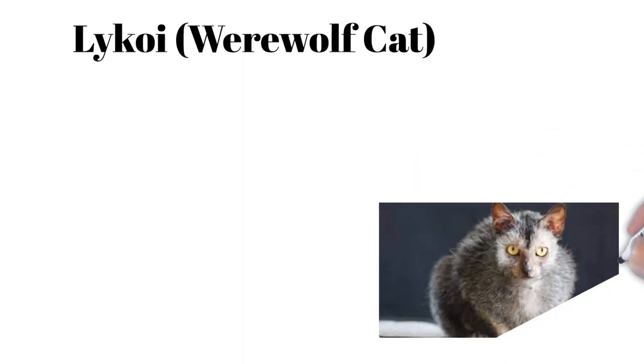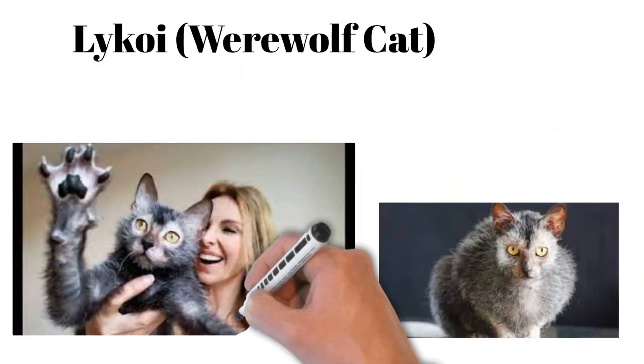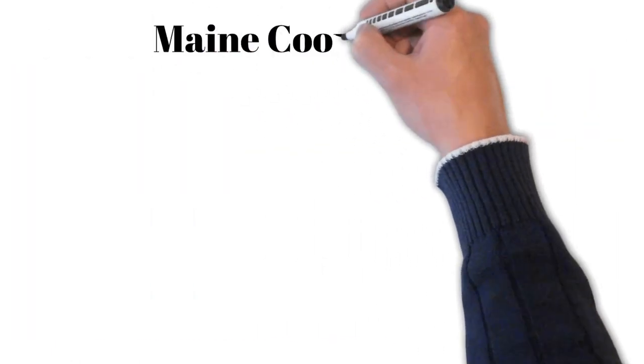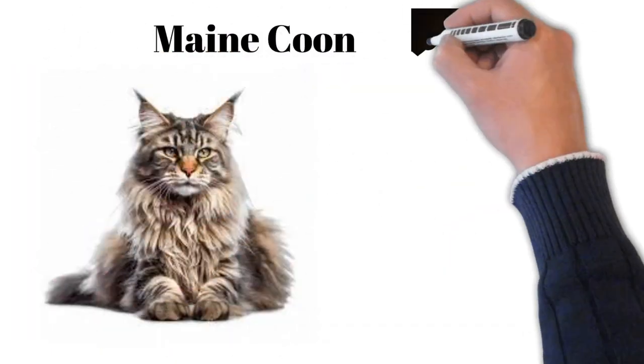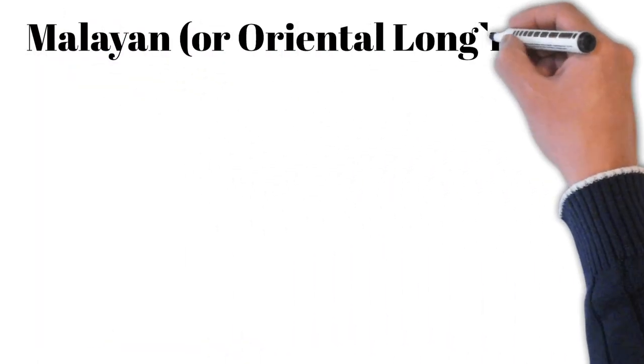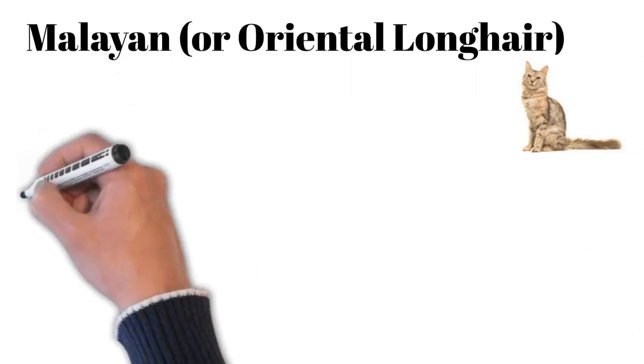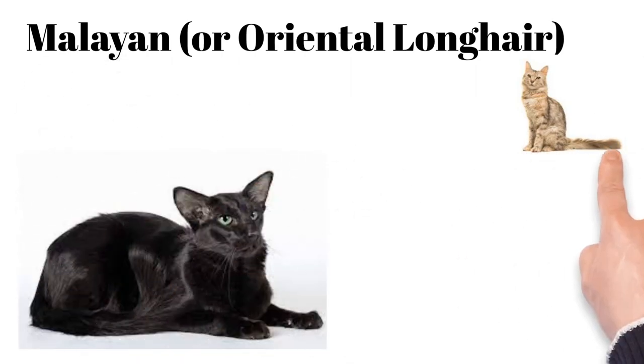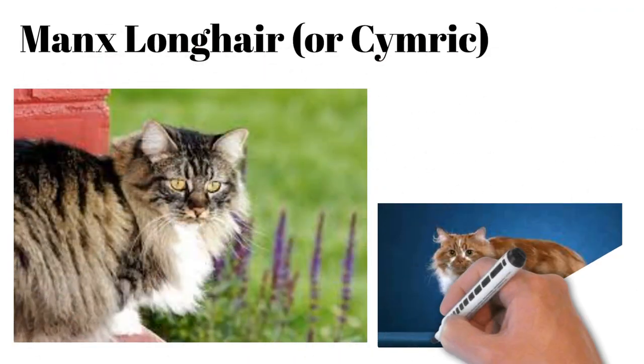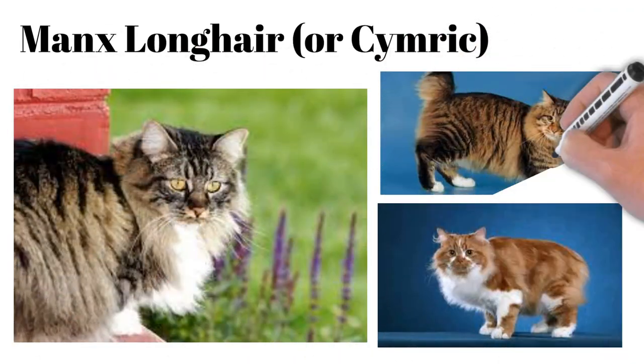Lykoi: werewolf cat, partially hairless, loyal, playful, unique appearance. Maine Coon: large, tufted ears, friendly giants, intelligent, and mouse hunters. Malayan or Oriental Longhair: elegant, slender, affectionate, variety of colors. Manx Longhair or Cymric: tailless, long-haired, friendly, playful, good with kids. Munchkin: short legs, outgoing, playful, loves social interaction.